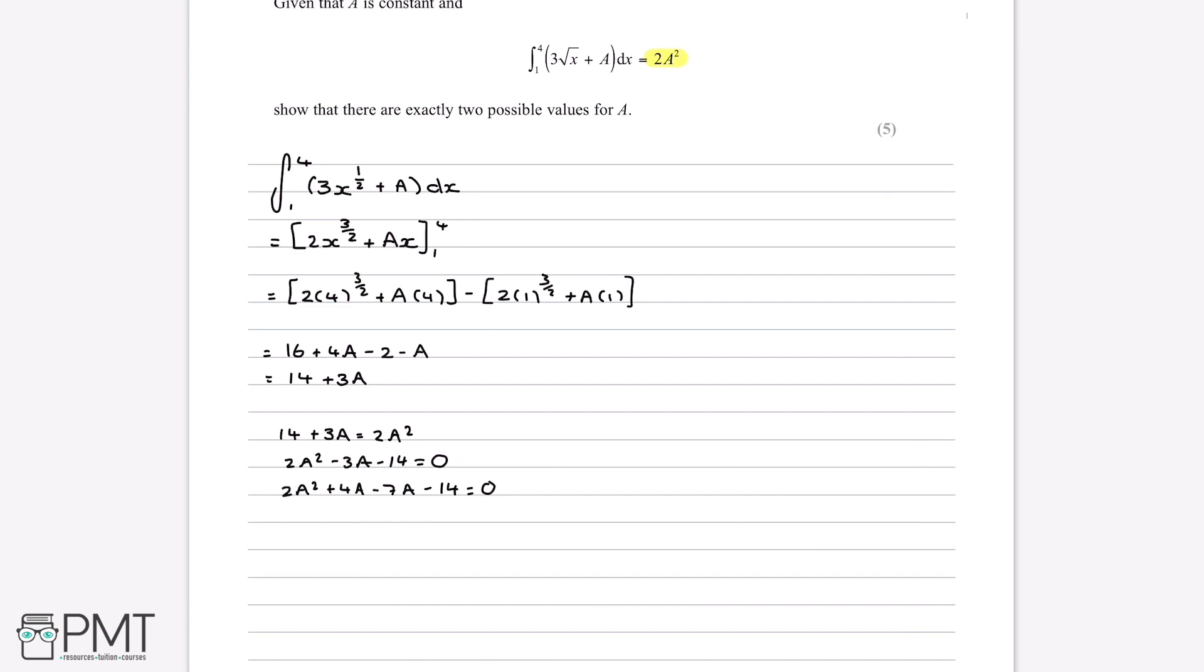So if we factorise the first half of this, the 2a squared plus 4a, 2a goes into both of these terms. So we can write it as 2a bracket a plus 2. And similarly for the last two terms, minus 7 is a factor of both. So then inside the bracket, we get the exact same thing as the other side, which should always happen, a plus 2. And this is still all equal to 0.